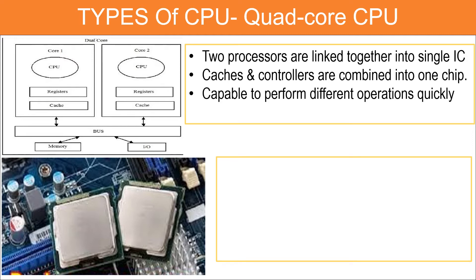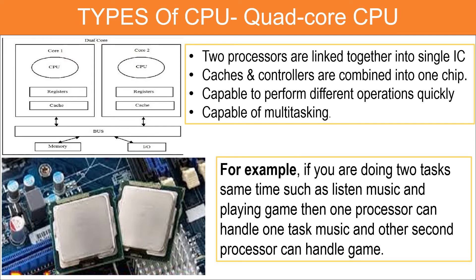Dual core processors are capable of multitasking. For example, if you are doing two tasks at the same time, such as listening to music and playing a game, then one processor can handle one task like music and the second processor can handle the second task like the game.